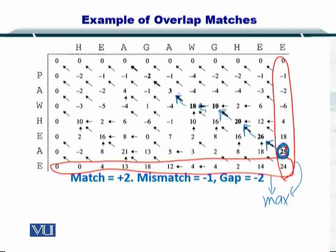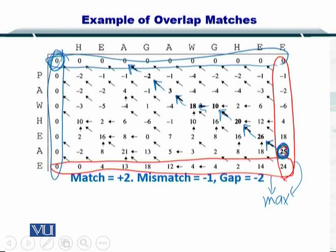However, you do not end up with the top left element. You may end up anywhere on the top row or the left column. So as you can see here, you have ended up on this zero and this 25. So essentially it means that sequence number one and sequence number two,